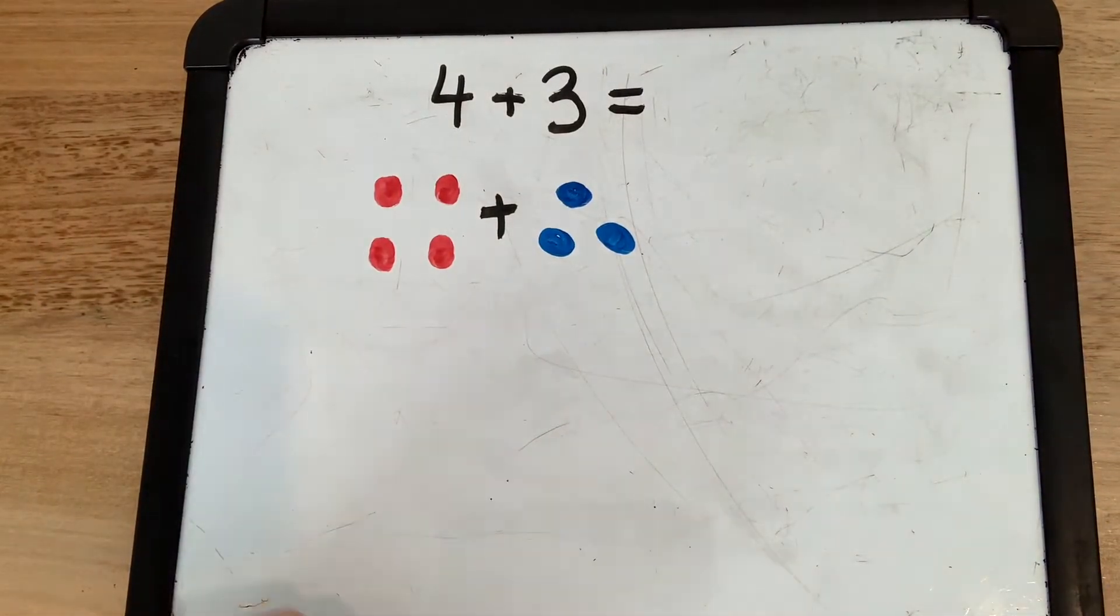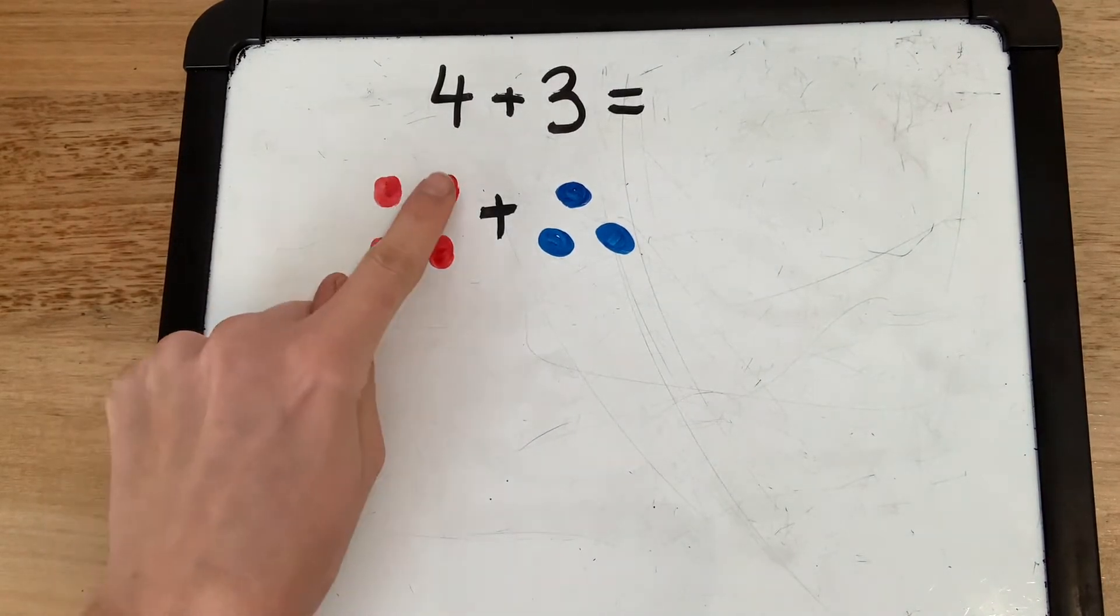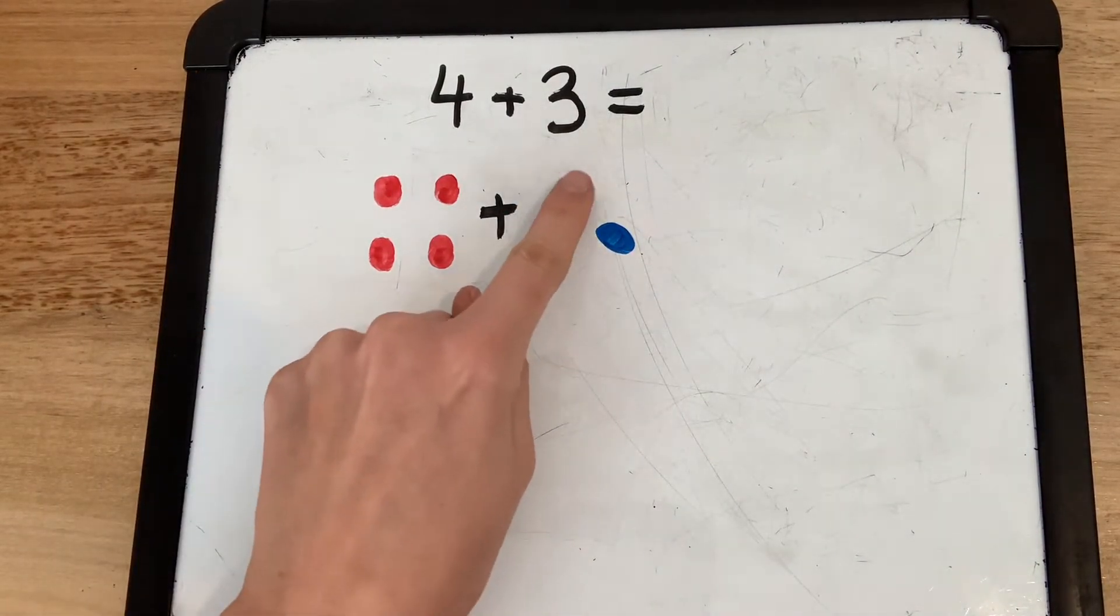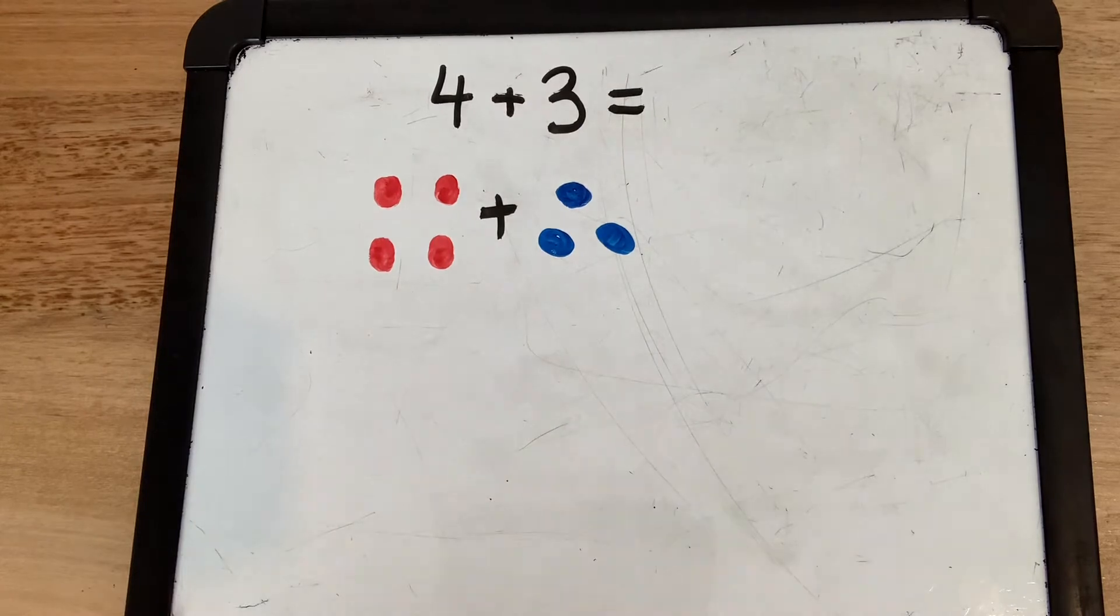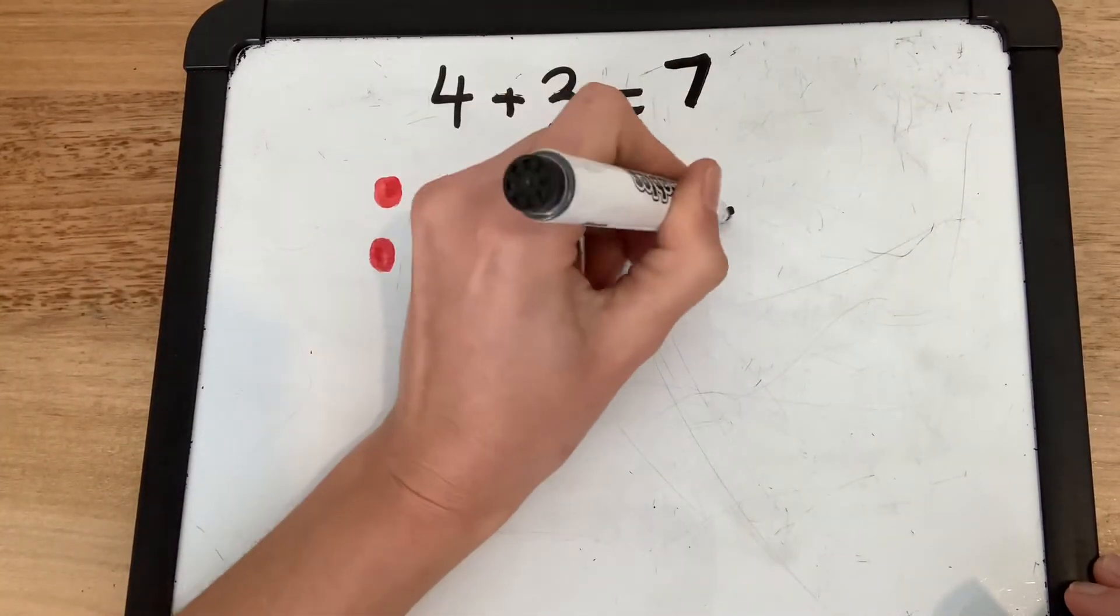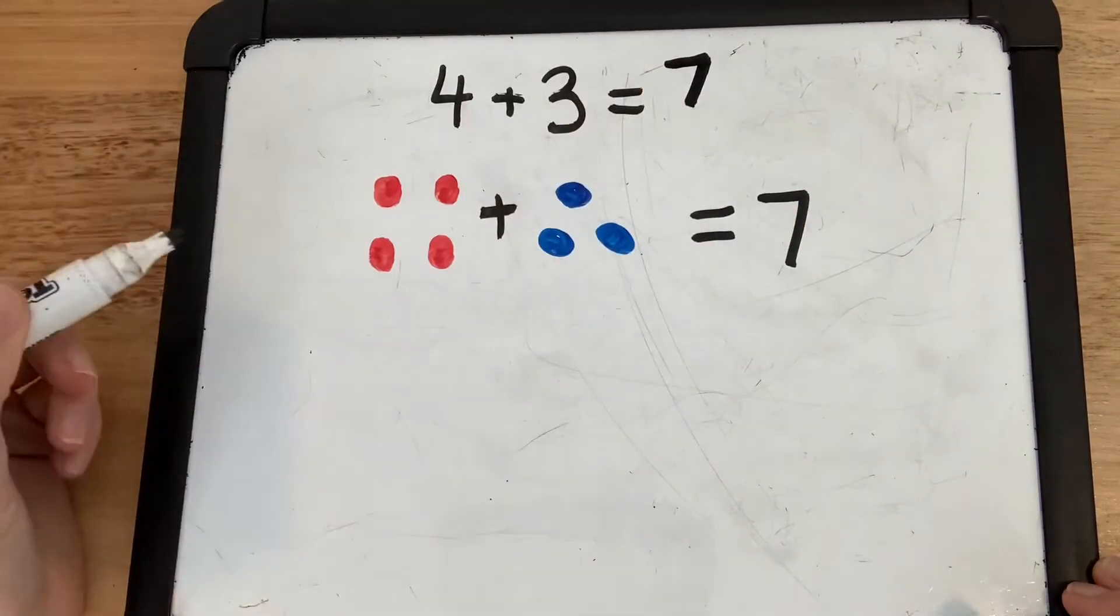Okay, how many all together? 1, 2, 3, 4, 5, 6, 7. 4 and 3 made 7. Equals 7. There we go.